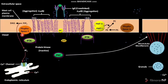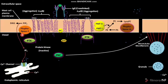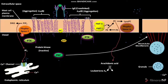This influx of calcium ions causes the activation of phospholipase A2. The activated phospholipase A2 catalyzes a reaction in which PC is broken down to form lyso-PC and arachidonic acid. The arachidonic acid is then converted into mediators like leukotriene A4 and prostaglandin D2 (PGD2).